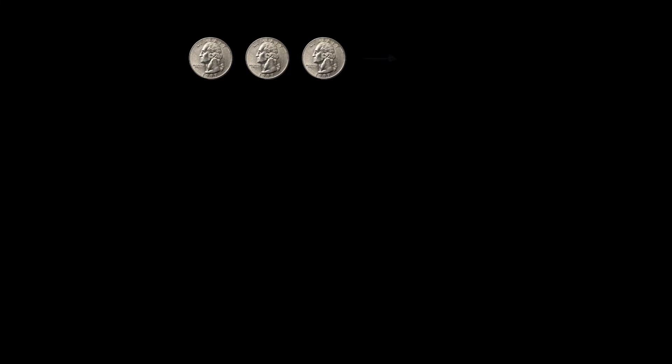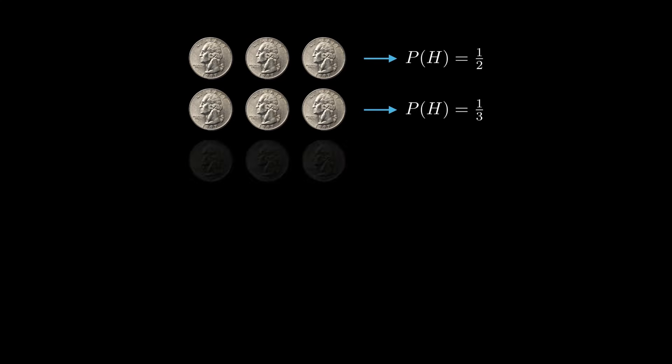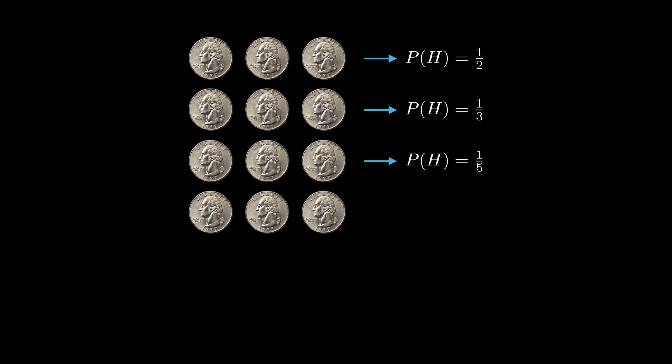We have 12 coins. Three of them have a probability of heads equal to 1 by 2. Another three of them have a probability of heads equal to 1 by 3. Another three of them have a probability of heads equal to 1 by 5. And the last three have a probability of heads equal to 1 by 9.